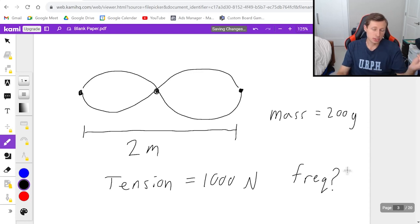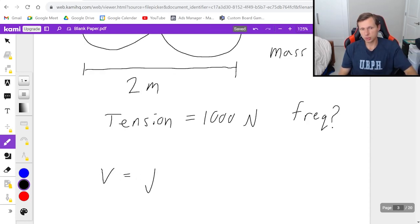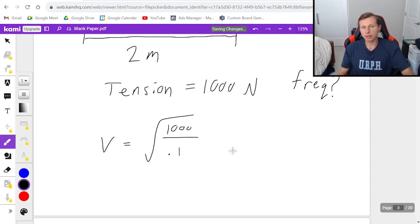So let's see how we'd solve this. First, velocity is equal to the square root of the tension force, 1000, divided by the linear mass density, which is the exact same as the last problem. It was 0.1. If you plug this in a calculator, you're going to get exactly 100. Isn't that cool?